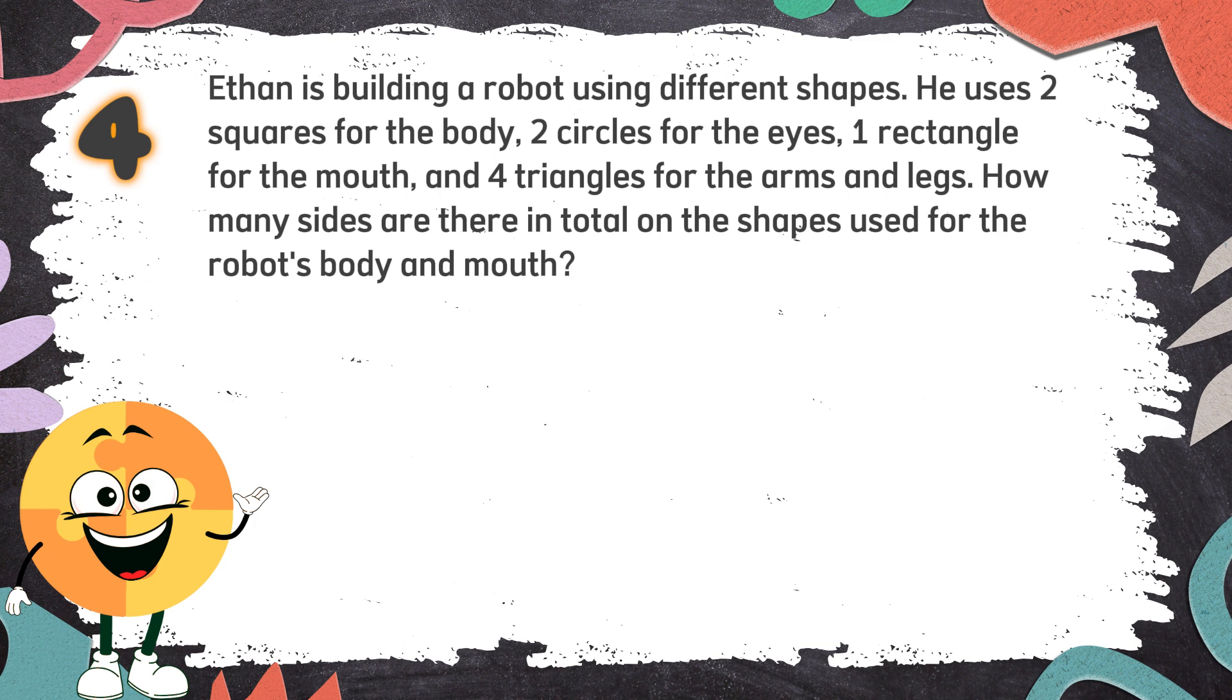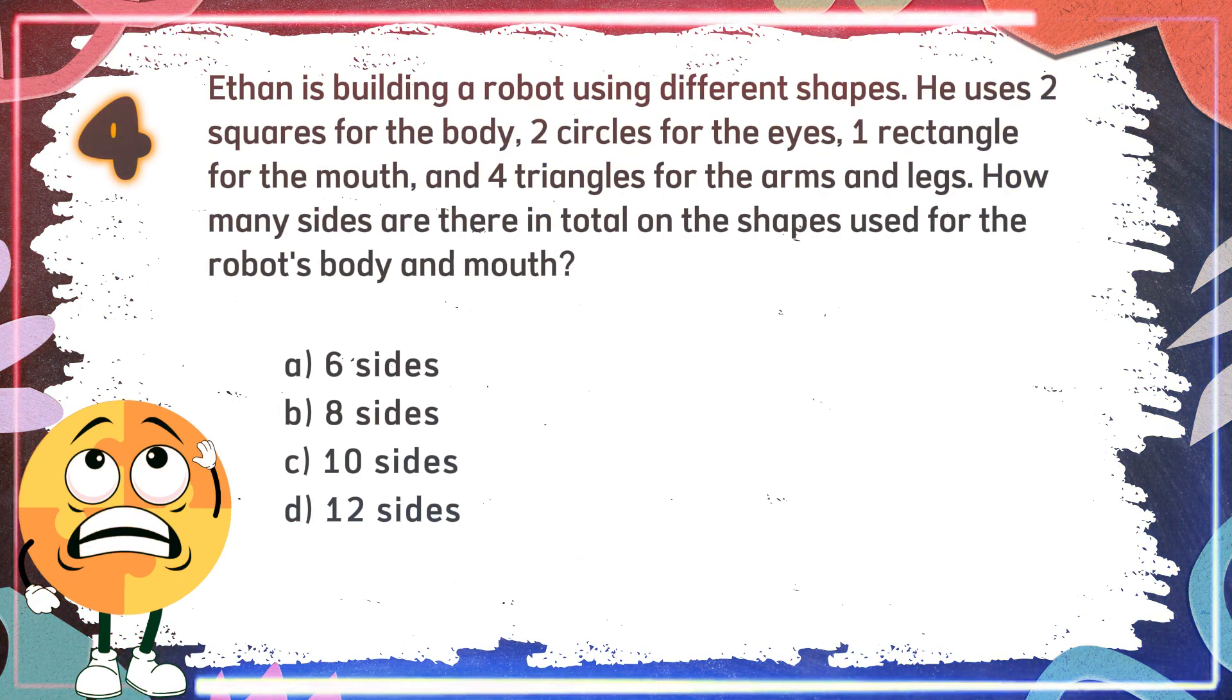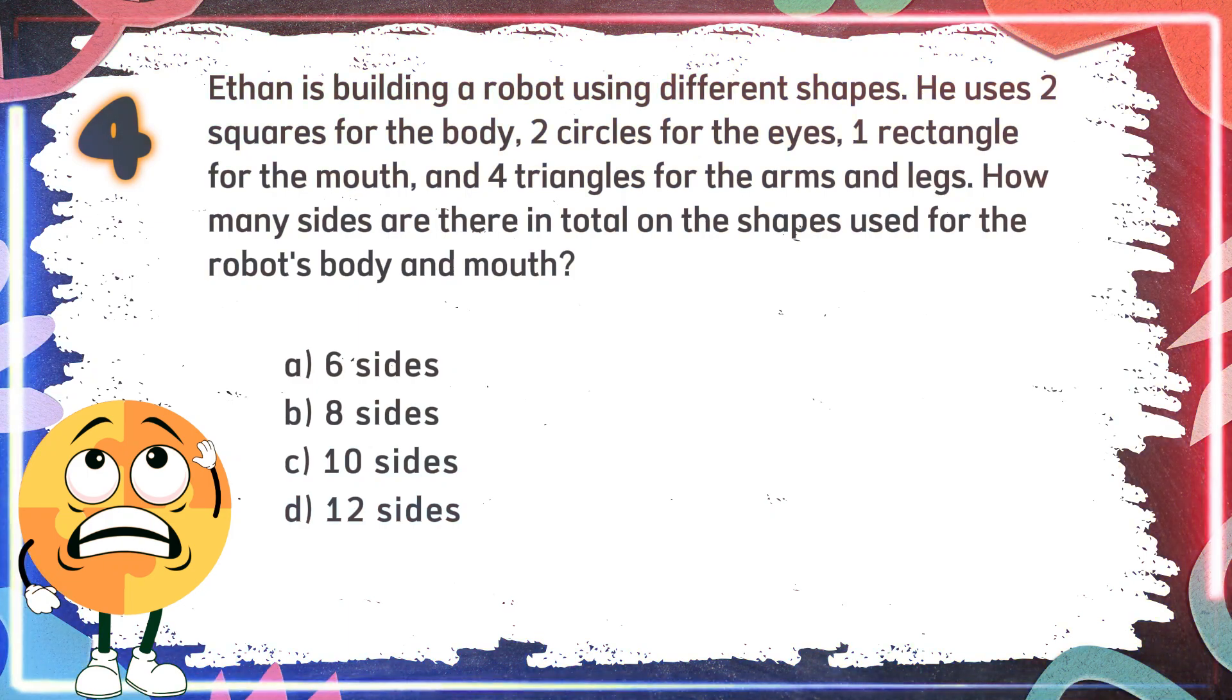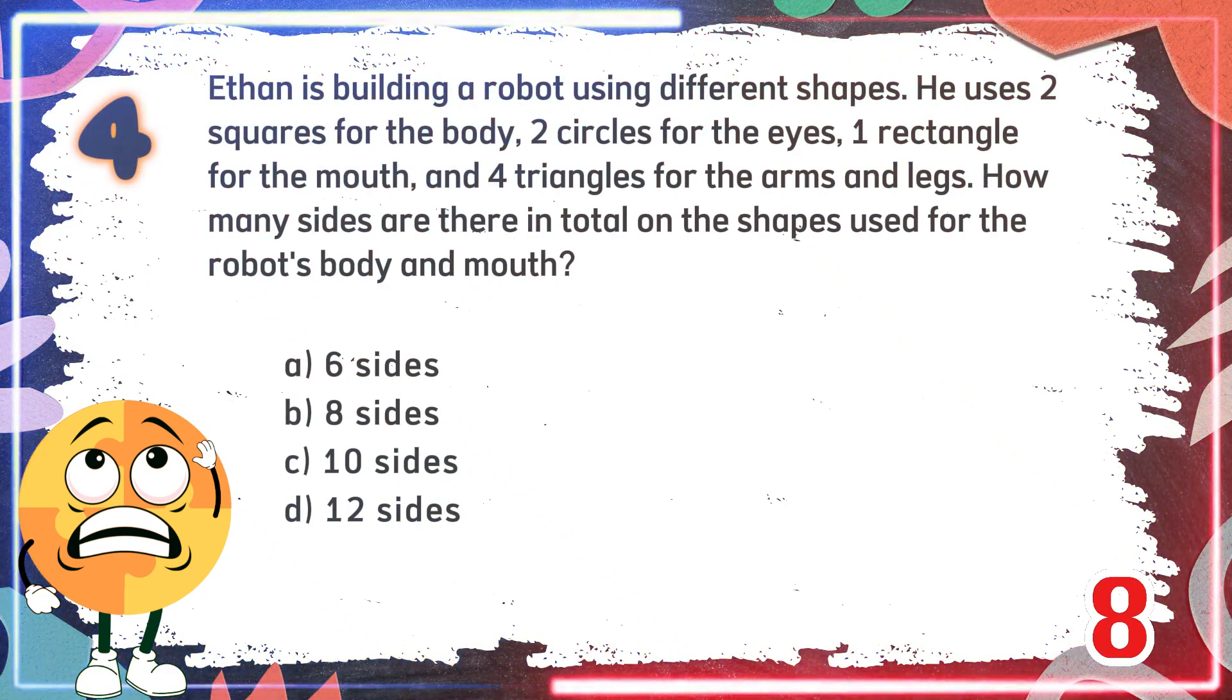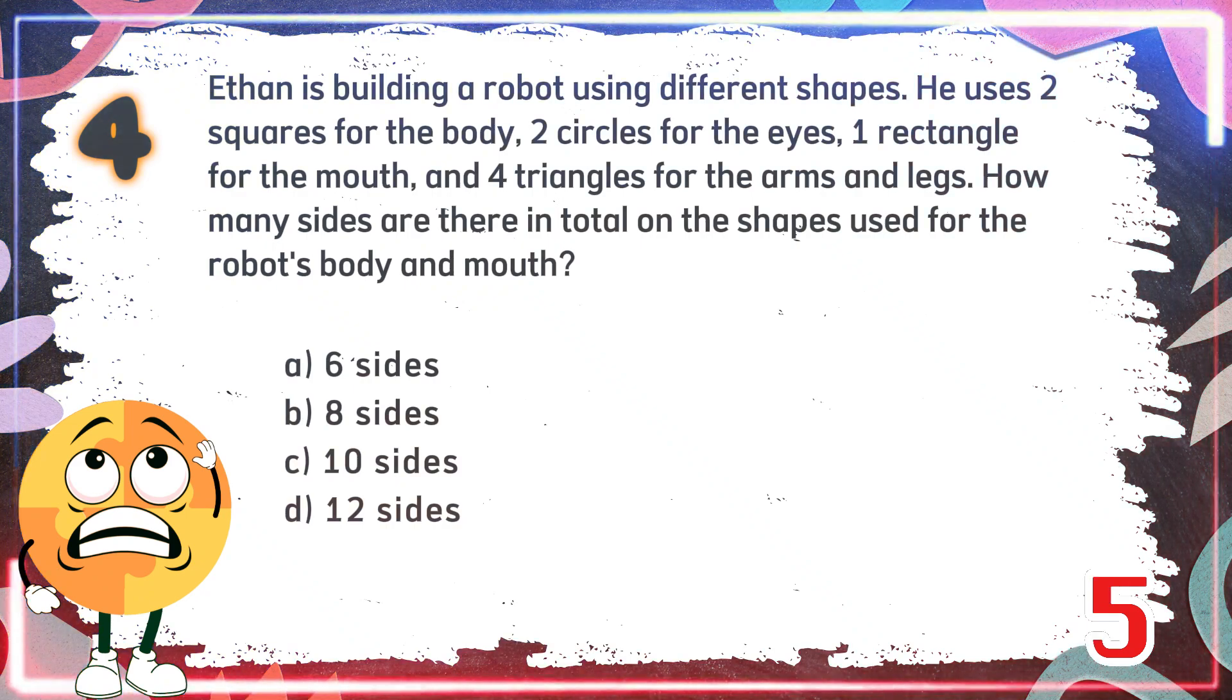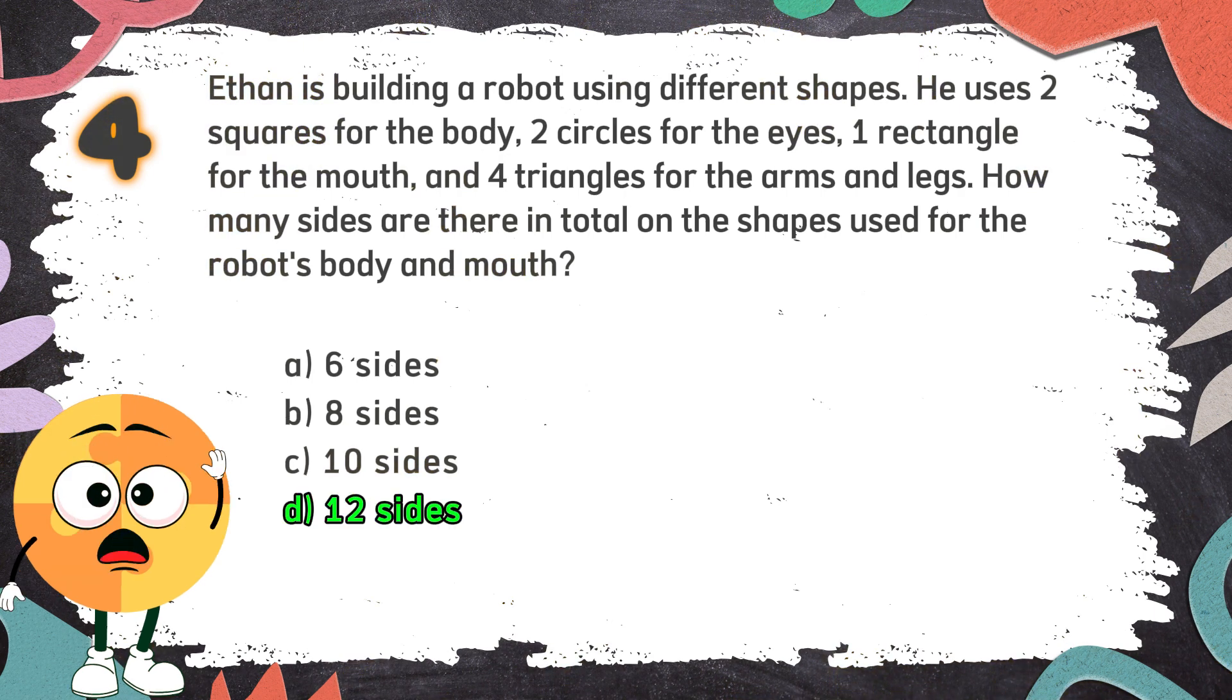Number 4: Ethan is building a robot using different shapes. He uses two squares for the body, two circles for the eyes, one rectangle for the mouth, and four triangles for the arms and legs. How many sides are there in total on the shapes used for the robot's body and mouth? The choices are A. 6 sides, B. 8 sides, C. 10 sides, D. 12 sides. The correct answer is D. 12 sides.